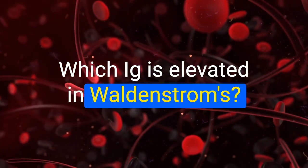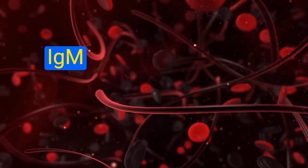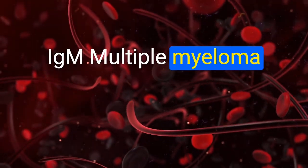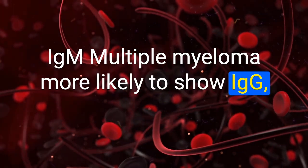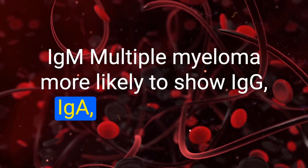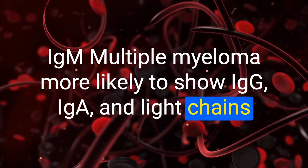IgM is elevated in Waldenstrom's macroglobulinemia. Multiple myeloma is more likely to show IgG, IgA, and light chains.